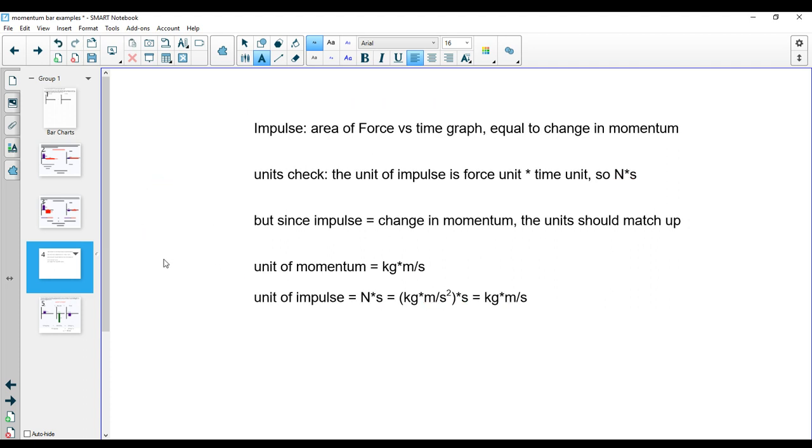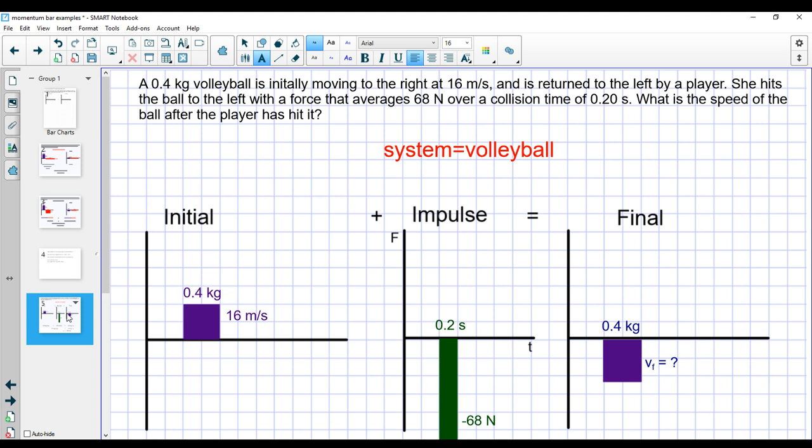So with that, thinking about the units out of the way, let's look at a situation where the momentum of a system does not stay the same. I've got a volleyball moving to the right. It gets hit by a player, by a volleyball player. So the volleyball player hits the ball to the left. And we know that she hits it with an average force of 68 Newtons over a collision time of 0.2 seconds, which in collision times between things hitting each other tends to be pretty small for most collisions.